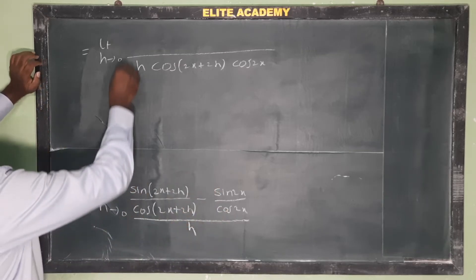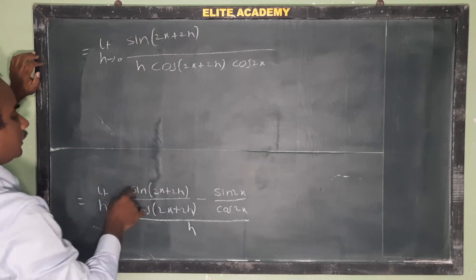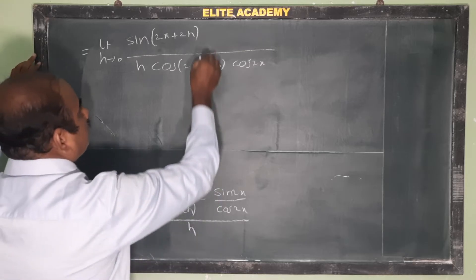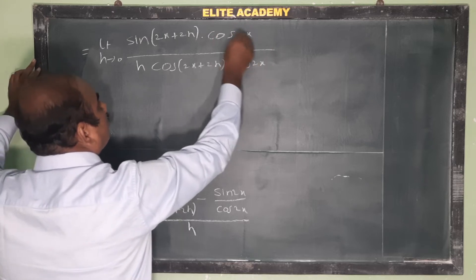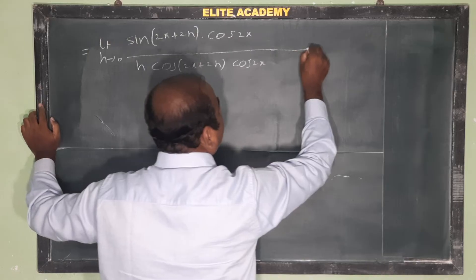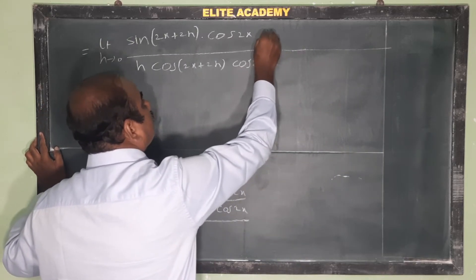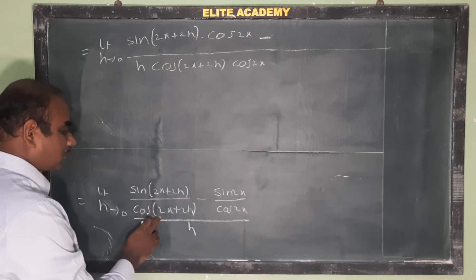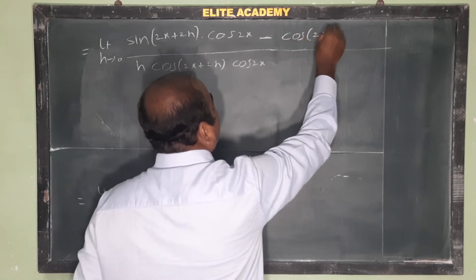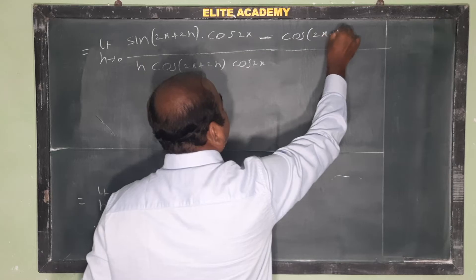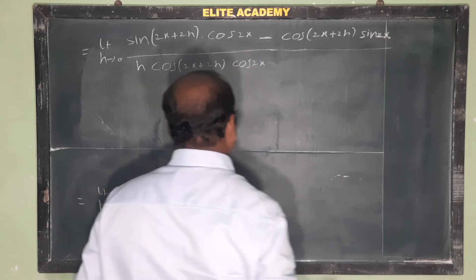After cross multiplication, the numerator is sin(2x plus 2h) into cos 2x minus cos(2x plus 2h) into sin 2x.